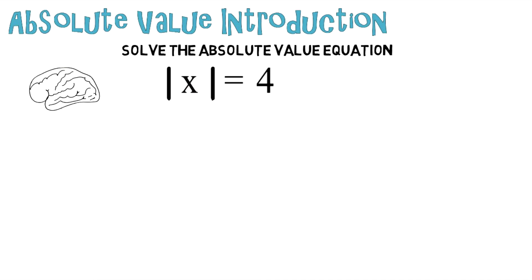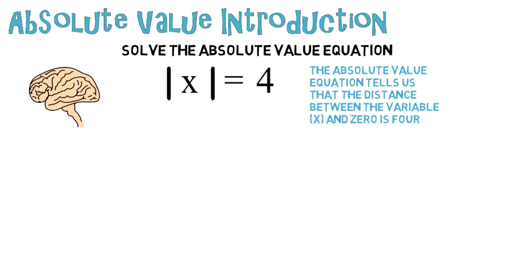Now, I want you to take a quick second and think about what absolute value actually means. The absolute value equation tells us that the distance between the variable X and zero is four.